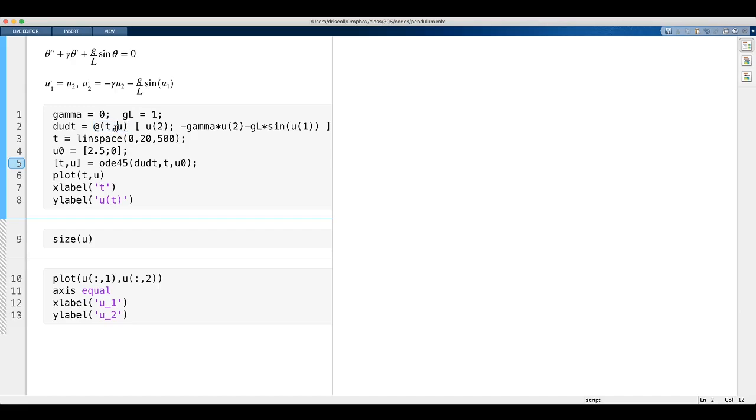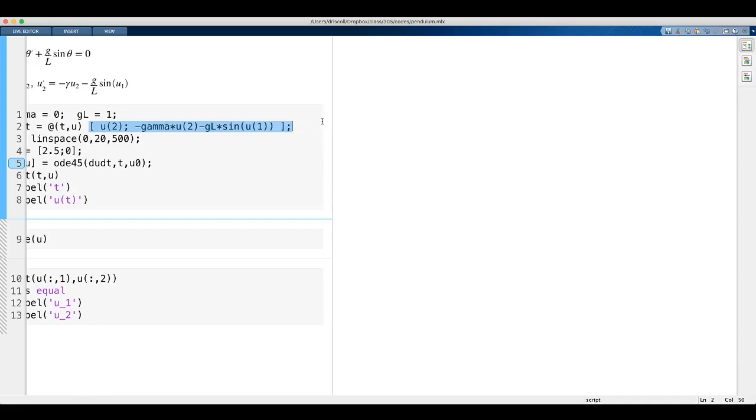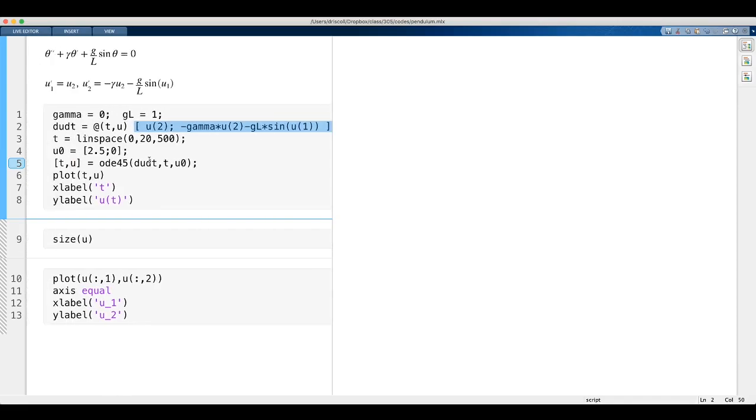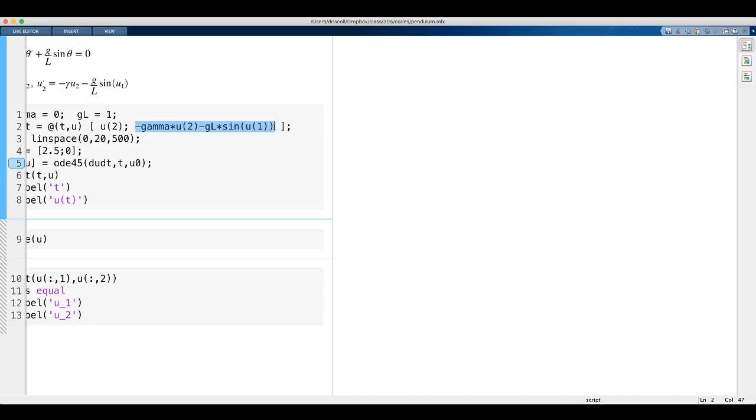But u is now a vector variable. And the result, du dt, also has to be a vector. For this stuff, MATLAB really wants column vectors. So that's why this is going to be shaped as a column vector with the brackets and a semicolon. The first component of du dt is just u2. That comes from this first equation. The second component, u2 prime, comes from this, and there's u2 prime.